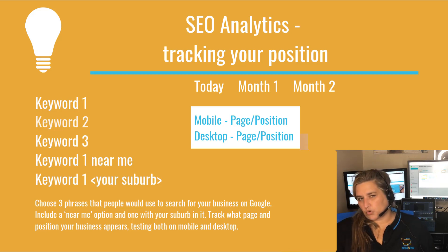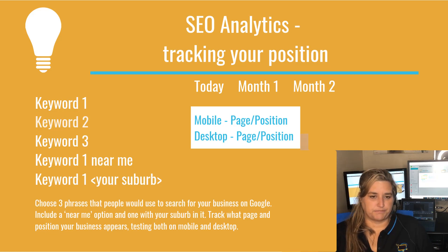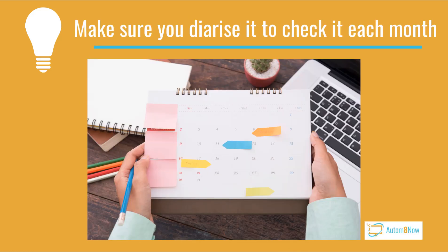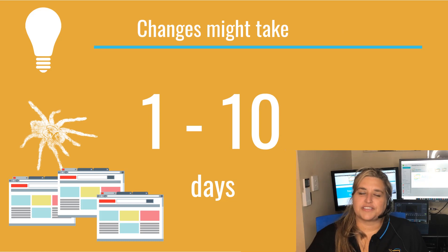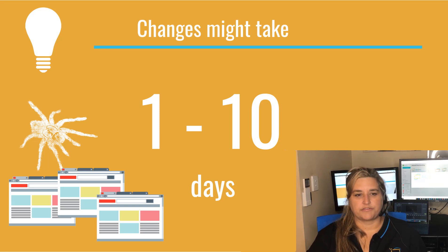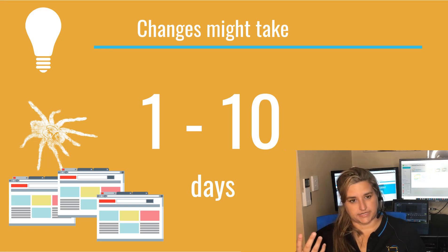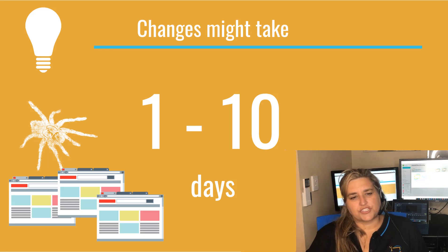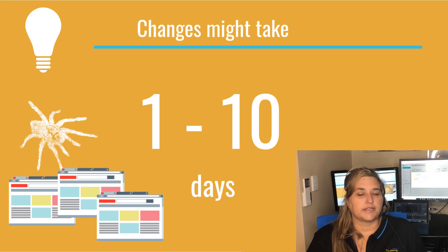Try to have a couple of phrases in mind, and include one that makes it more local — add your suburb or 'near me' at the end. Then set up a monthly task in your calendar to repeat this and track your changes. Note that search engines crawl and index new pages, which can take from one day to ten days, so changes you make should be checked after about two weeks — by that date they should at least be in effect.